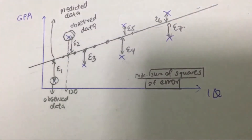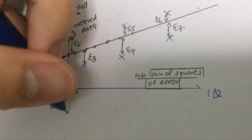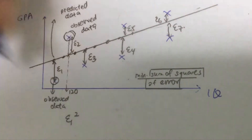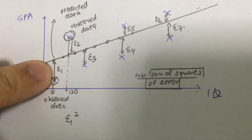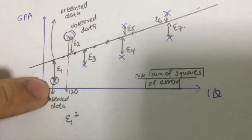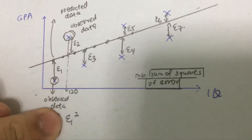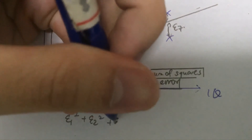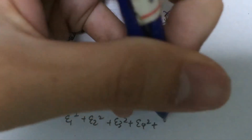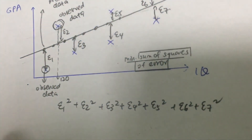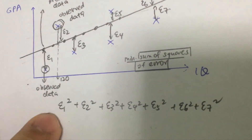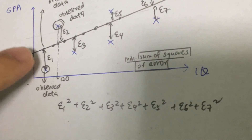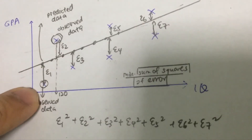And E6 and E7. What we then do is square the errors. For each data point, once we calculate the vertical distance between the predicted data and the observed data, we square that vertical distance — which is the error. We do the same for all the remaining errors and then sum them all up: we sum all the squares of the errors, where the error is the vertical distance between the predicted data and the observed data.